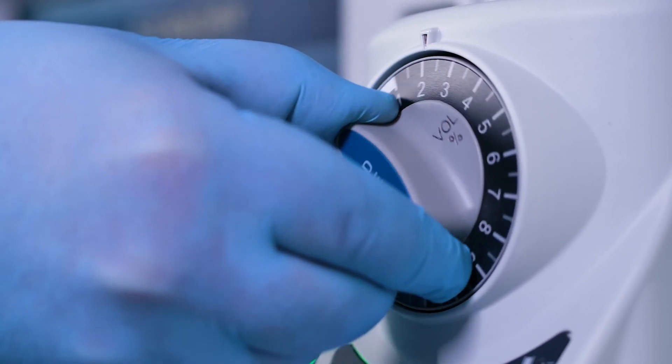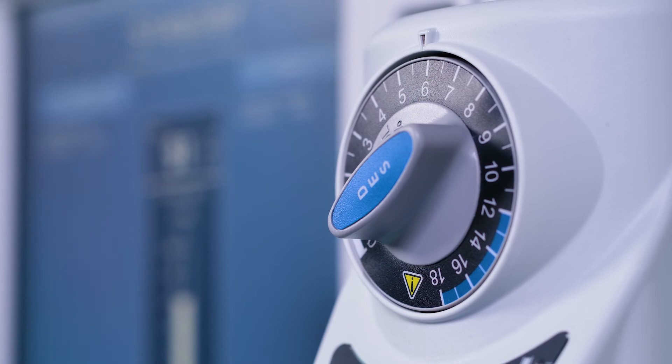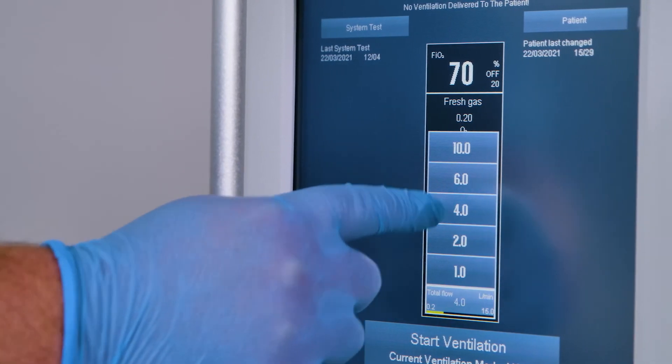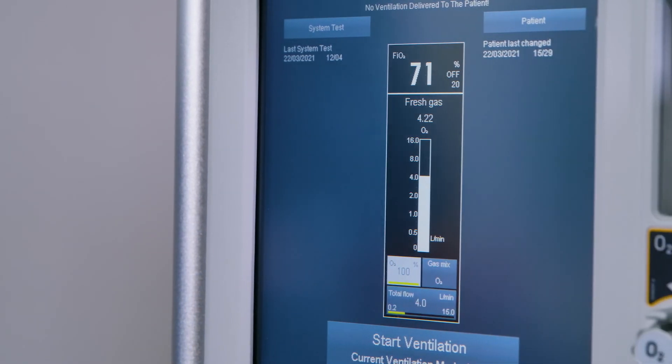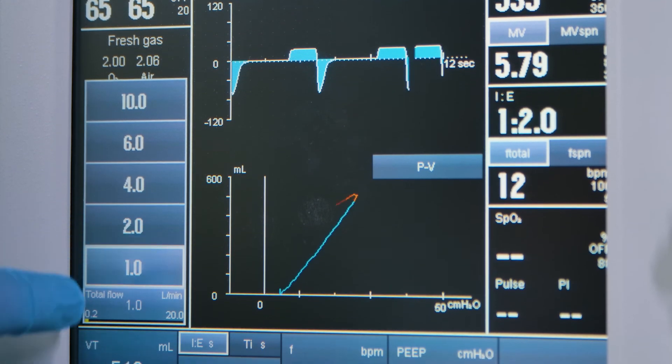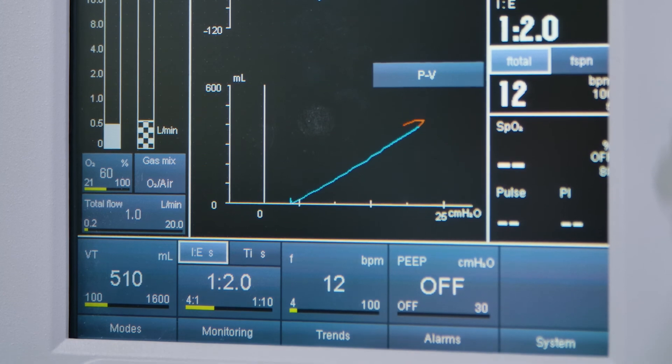A fully charged battery will power the vaporizer for a minimum of 5 minutes at a set concentration of 6% and a fresh gas flow of 4 litres per minute. At higher settings, the backup period may be shortened. The backup period may extend to a maximum of 30 minutes, depending on the fresh gas flow rate and concentration setting.